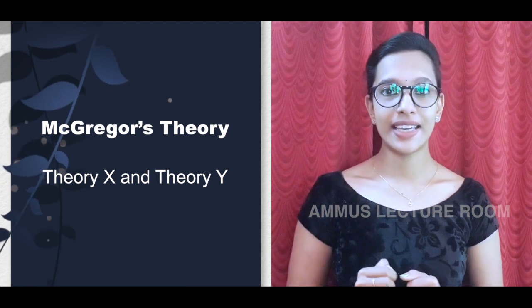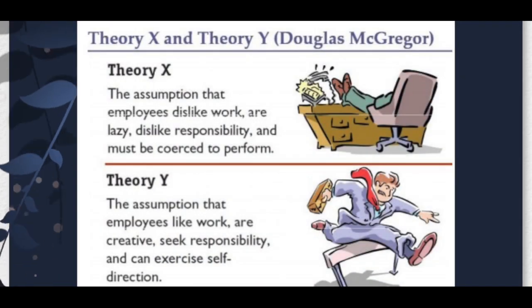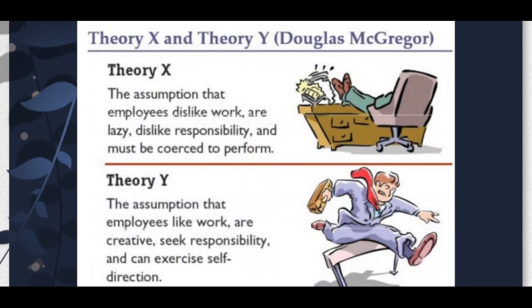The fourth theory is McGregor's Theory X and Theory Y, introduced by Douglas McGregor in the 1960s. This theory describes two different managerial attitudes toward workforce motivation. Theory X represents a negative attitude — managers assume the workforce is lazy and requires close supervision and authority. Theory Y represents a positive attitude toward employees.